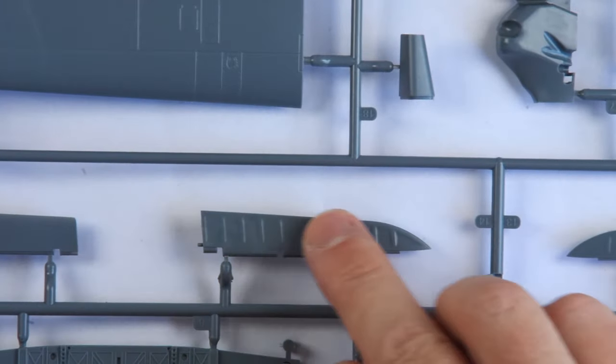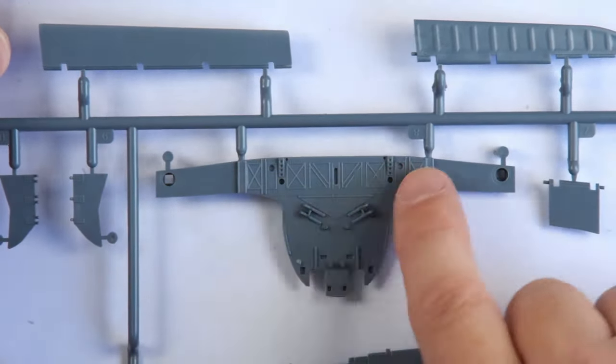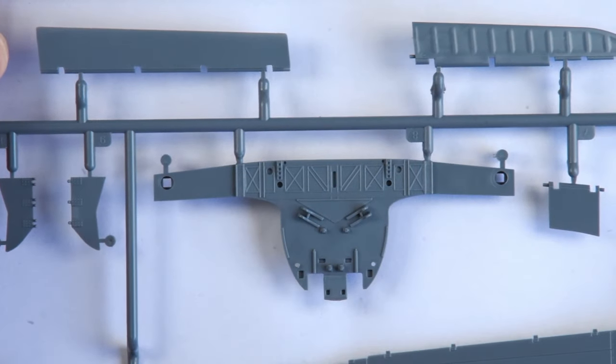Here are some of the control surfaces. And this is the forward main spar and engine rear firewall, again with some nice detail.